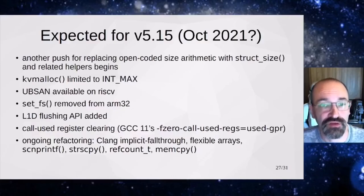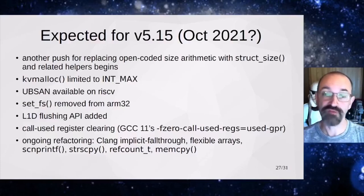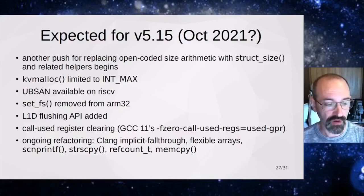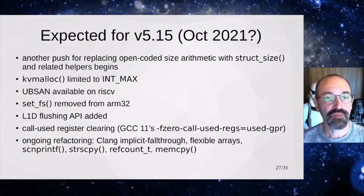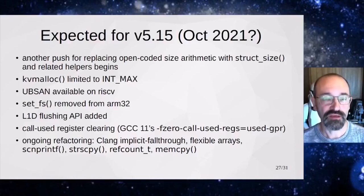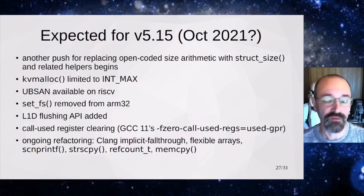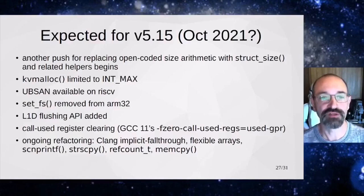Expected for 5.15 — we're through the merge window so I can look at what's already in there. There's another push for replacing open-coded size arithmetic with struct_size. KV_malloc was limited to INT_MAX. UBSAN became available for RISC-V. SetFS was removed from ARM 32, one of the last remaining architectures where those exploits were explicitly used. The L1D flushing API was added — a large hammer for dealing with potentially unknown future side-channel attacks using the cache. GCC 11 gained call-used register clearing, a data lifetime reduction feature: at the end of every function, you clear all registers used in that function that won't be restored from the stack, so you leak less from function to function.